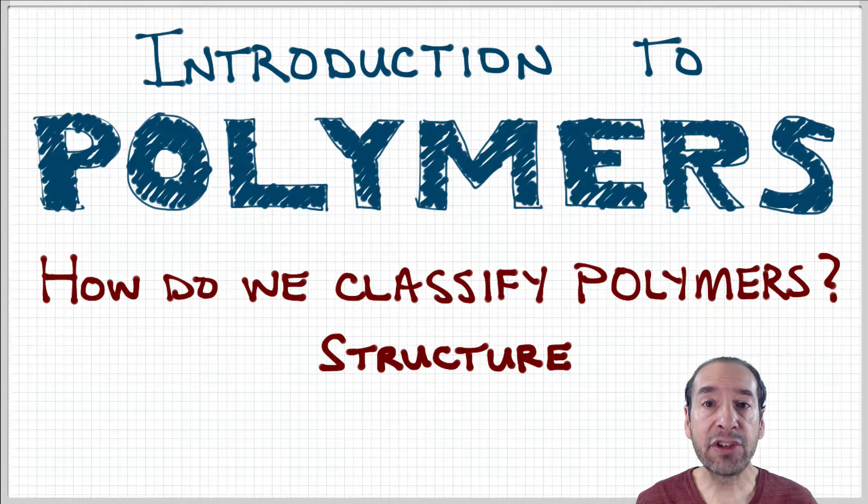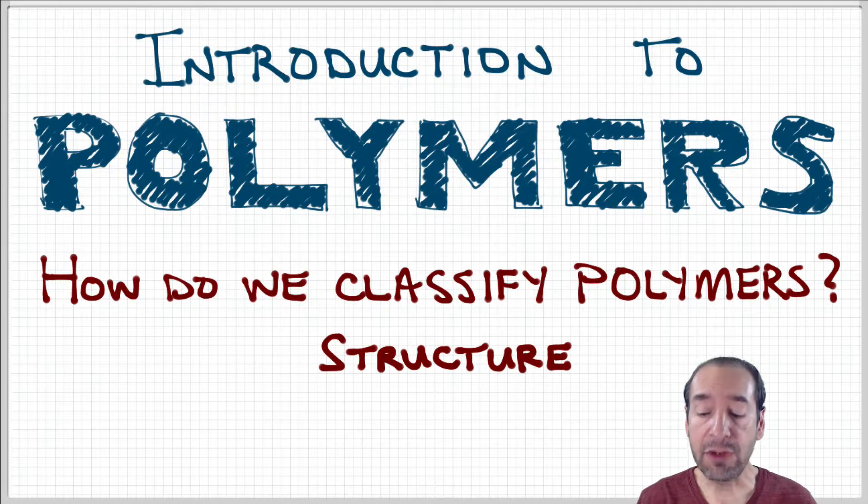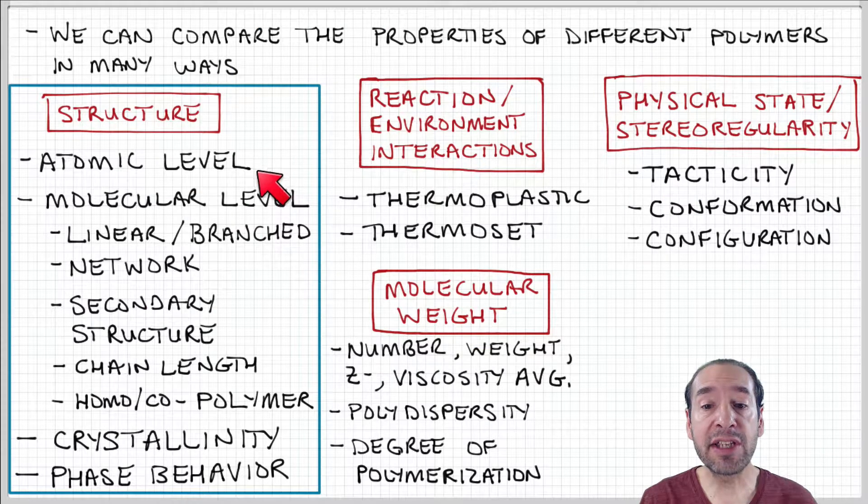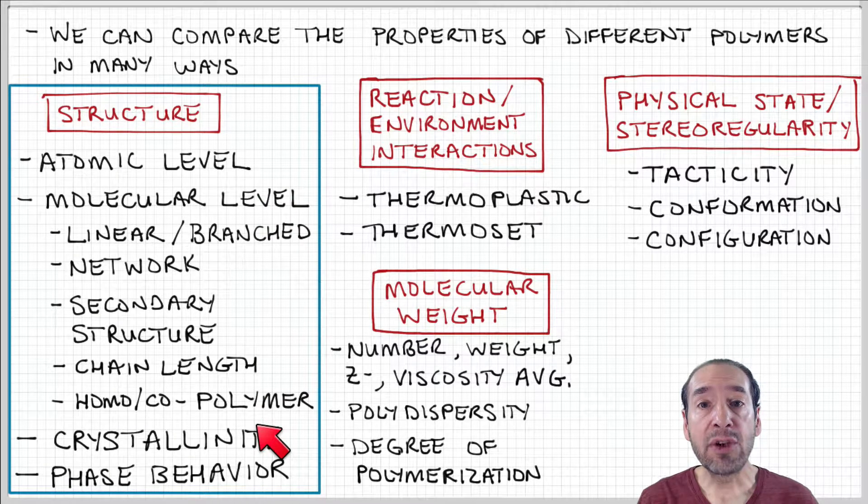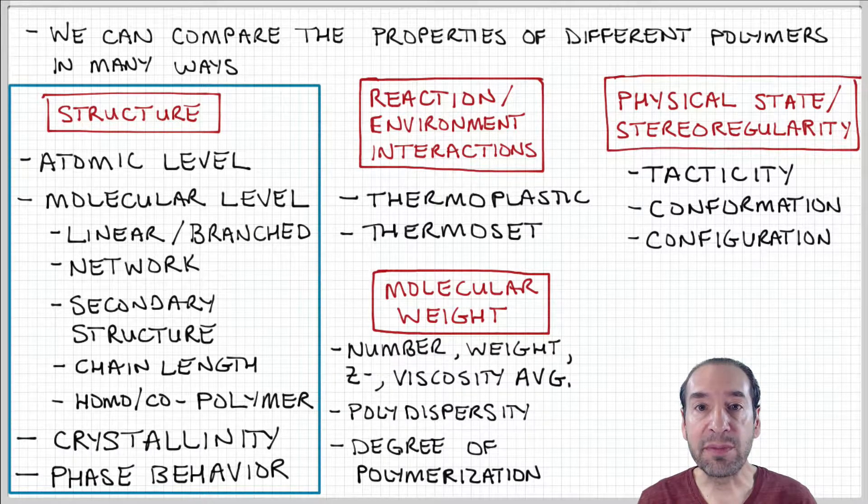One way we can classify different kinds of polymers is based on their structure. The structure of polymers can be discussed at various levels of detail. Here we're going to take a closer look at some of these structural attributes of polymers.